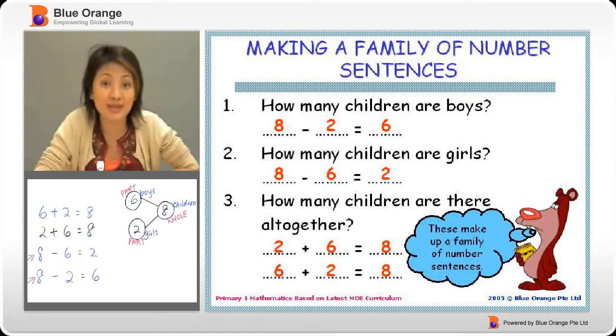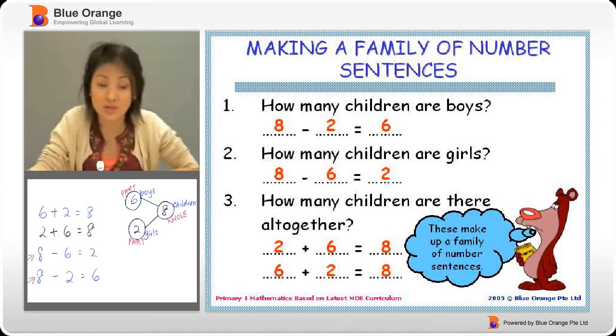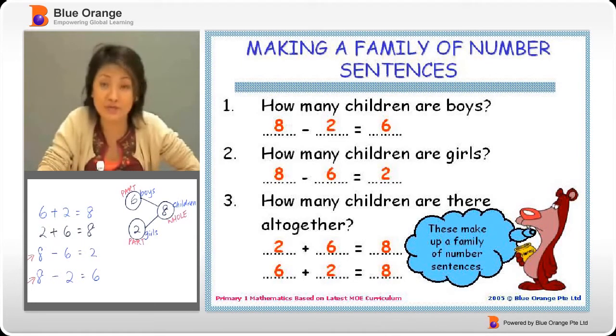How many children are there altogether? You can either take boys plus girls equals the children, or girls plus boys equals the children. So it's two plus six equals eight, or six plus two equals eight. So all these four sentences make up the family of number sentences.